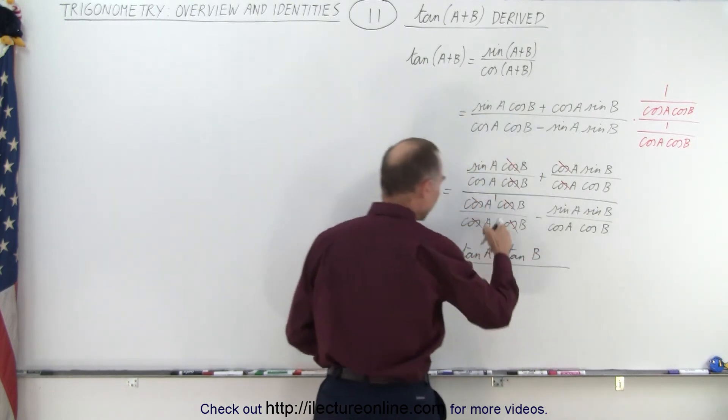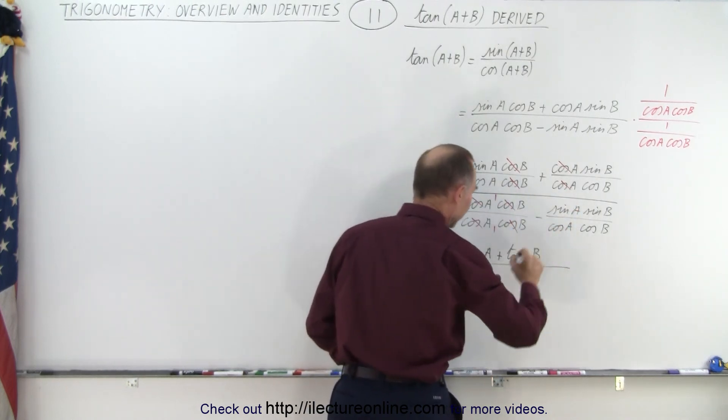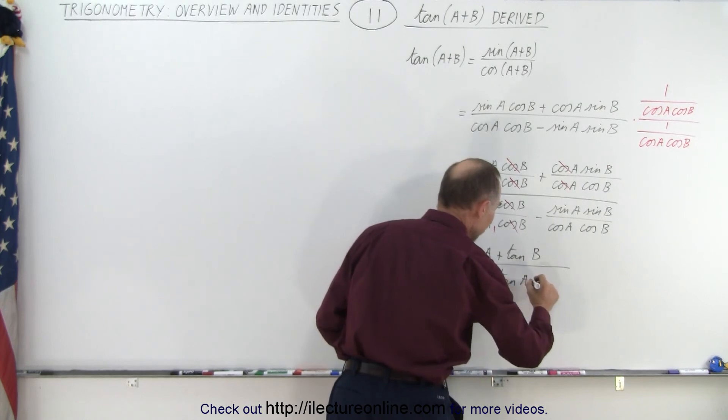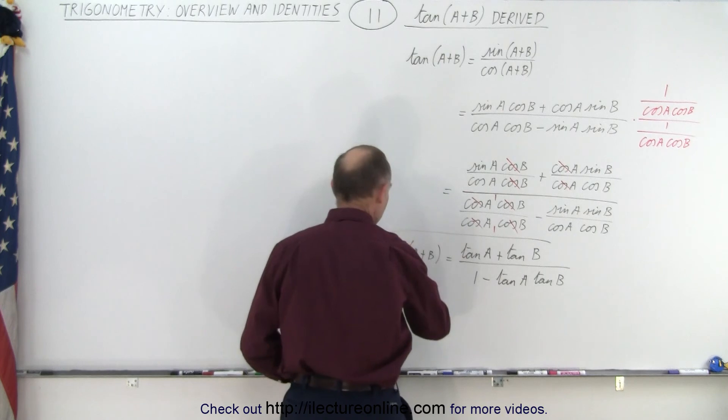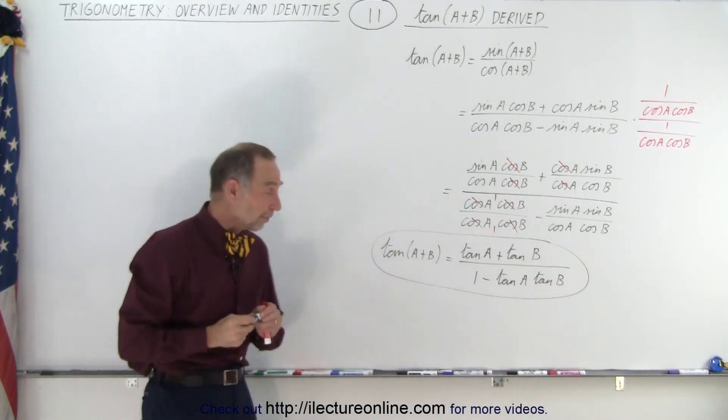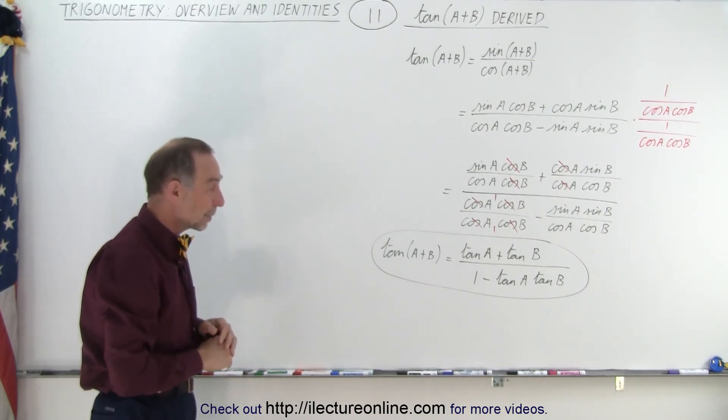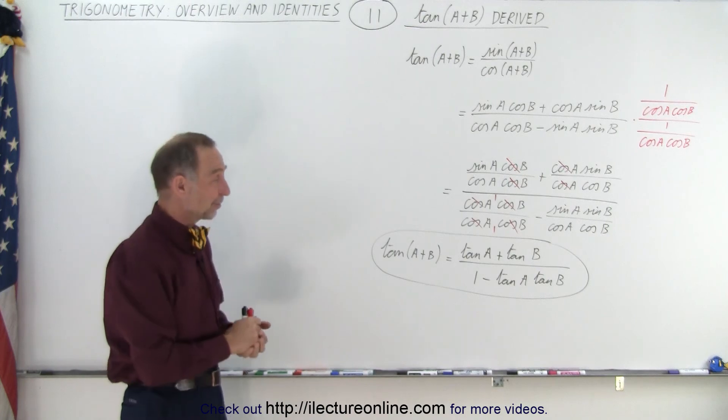divided by one minus sine of A over the cosine of A, that's the tangent of A, times the tangent of B. And that's how we are able to find the relationship between the tangent of the sum of angles and what it's equal to in terms of the single angles A and B, and that is how it's done.